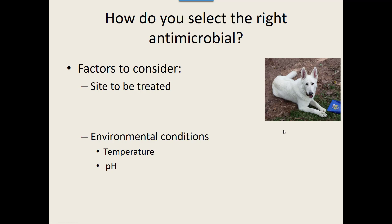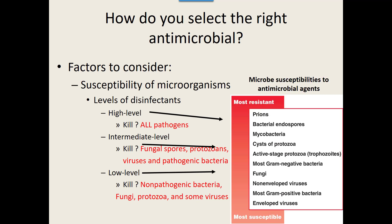We also want to know the environmental conditions — is it warm or cold where we're trying to kill these organisms? That can affect how an antimicrobial works. Similarly, what is the pH of the area? That can also change how the antimicrobial works. We also need to know the susceptibility of the microorganisms — are they easy or hard to kill? Are they susceptible to the antimicrobial or resistant?